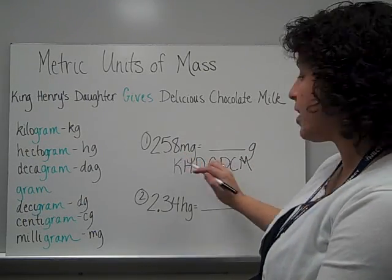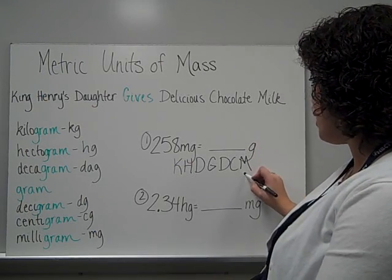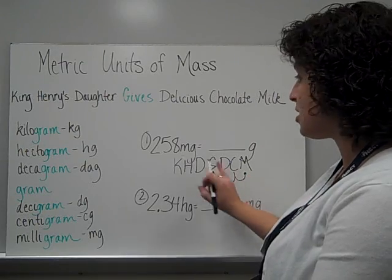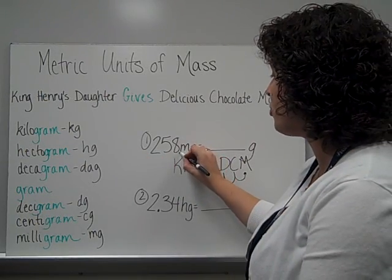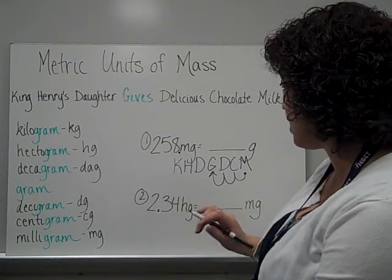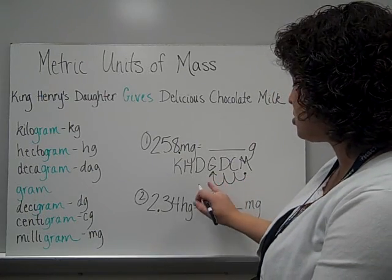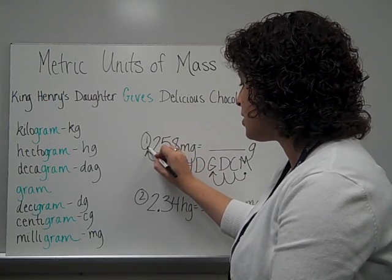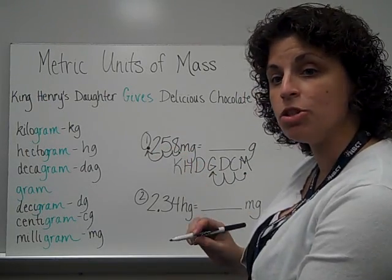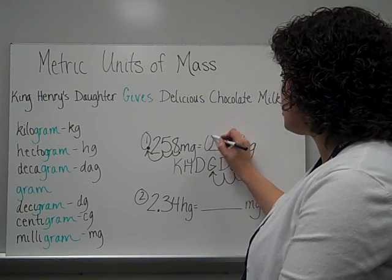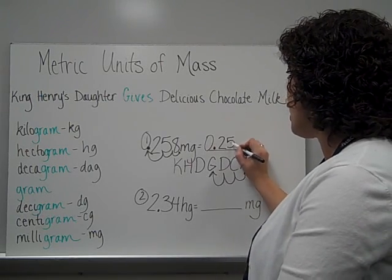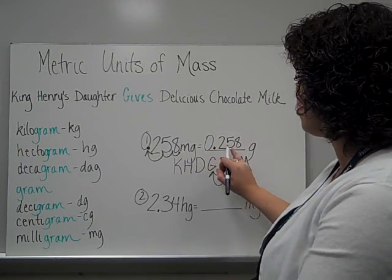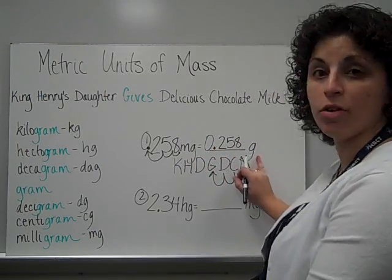I have 258 milligrams, and I need to know how many grams that is equivalent to. Starting at milligrams, I place my decimal. Moving to grams: one, two, three. So I need to take the decimal in 258 — which is at the end when we don't see it — and move it three places to the left: one, two, three. That puts my decimal now in front of the two. So that gives me 0.258 — zero and 258 thousandths of a gram.